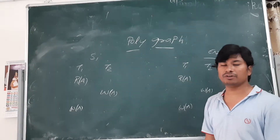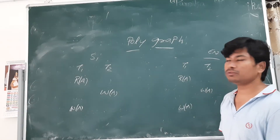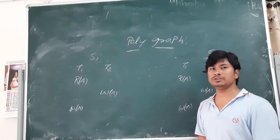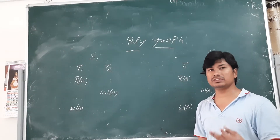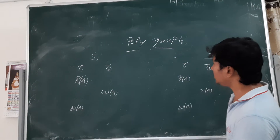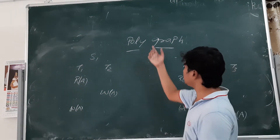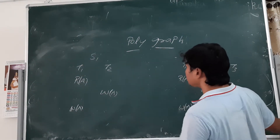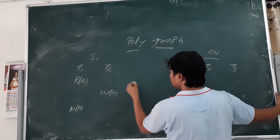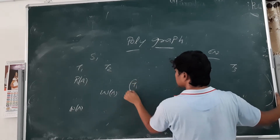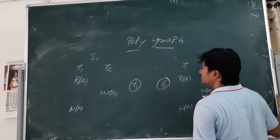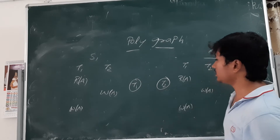For conflict serializability we used the precedence graph; now for view serializability we will construct the polygraph. By using the polygraph we will determine whether a schedule is view serializable or not. Since we have two transactions in this example, we will have two nodes in the graph.